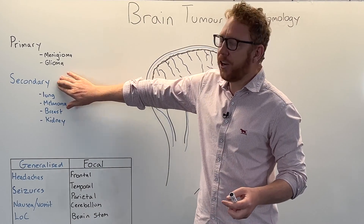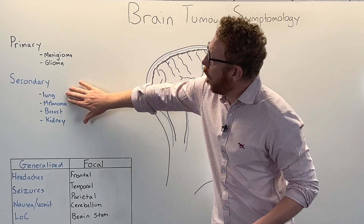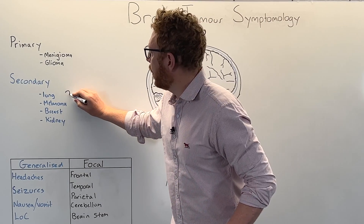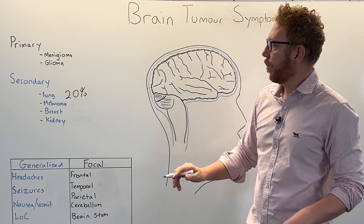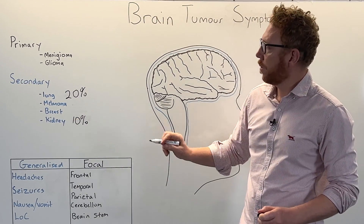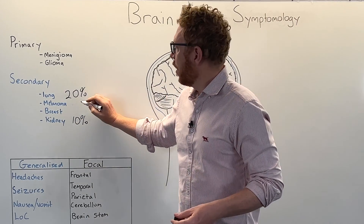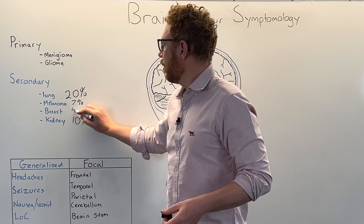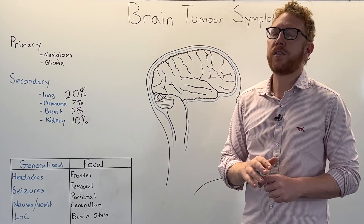Secondary or metastatic brain tumours are more common in adults. The most common sources are lung cancers, which account for approximately 20% of secondary brain tumours, followed by renal or kidney tumours at about 10%. Melanomas, specifically from melanocytes in the skin, make up about 7%, and breast tumours can metastasise to the brain in about 5% of secondary brain tumour cases.